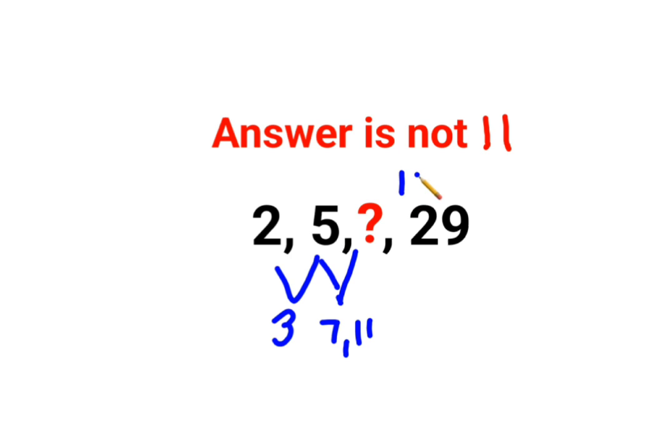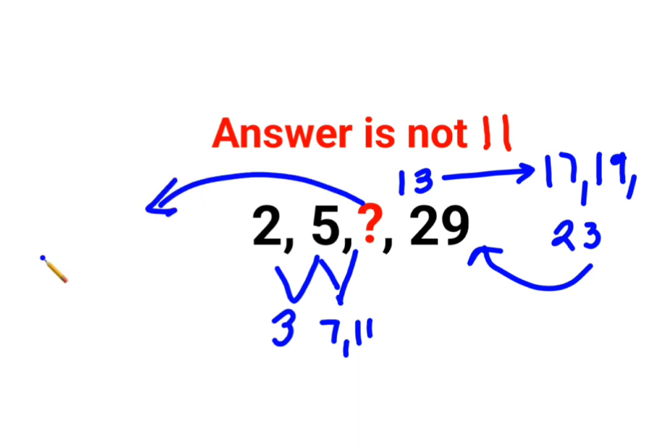So the next prime number should be 13. After 13, we skip 3 prime numbers: 17, 19, and 23. Then after 23, the prime number which comes is 29. So the answer for this question mark is supposed to be 13.